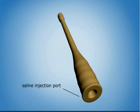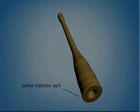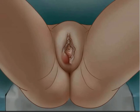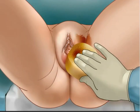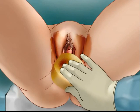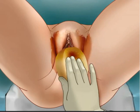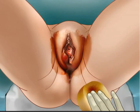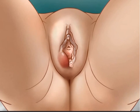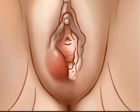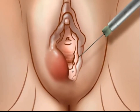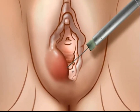Most procedures are performed as an outpatient procedure in the office or emergency room. The patient is placed in dorsal lithotomy position and the area is cleaned with an antiseptic solution. Local anesthesia is sufficient for most cases, achieved by infiltrating the skin overlying the planned incision with a 1% lidocaine solution.